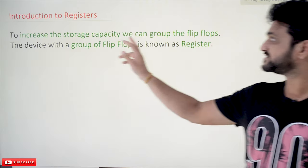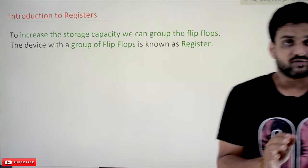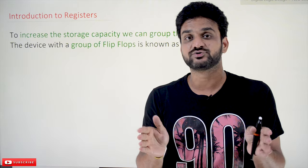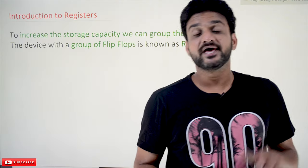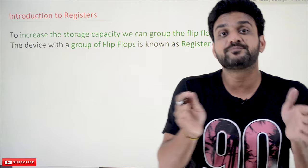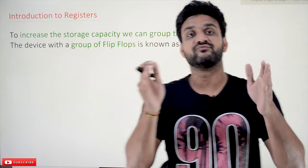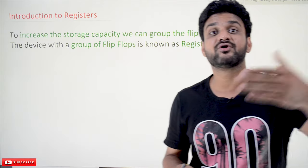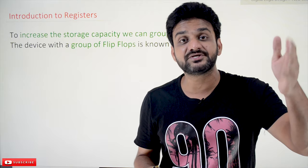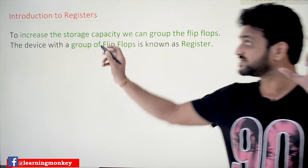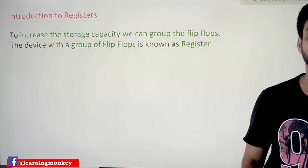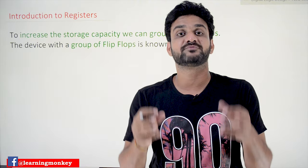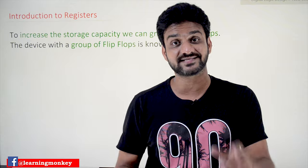To increase the storage capacity we can group the flip flops. Whenever we want to increase storage capacity, we can group the flip flops. A flip flop can store one single bit. If you group a number of flip flops onto one device, then we can store n number of bits. If you group n number of flip flops, n number of bits can be stored onto a single device. The device with a group of flip flops is known as a resistor. Whenever we group a number of flip flops onto one device, that device is what we call a resistor.